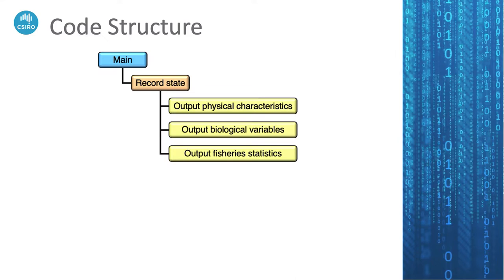The first step of every loop of the model is to record the state of the model — basically get ready to store output. That includes all the physical characteristics or physical variables, then the biological ones, then the fishery statistics such as catch and effort.